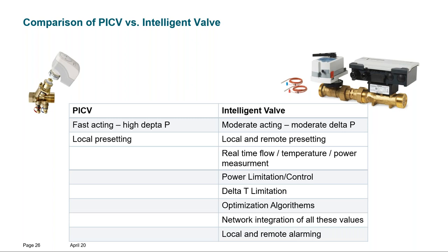The building automation controller can react on changes and reprioritize between different AHUs. With power measurement based on flow and temperatures, you can limit power to different zones and risers — not only flow limitation, but actual power limitation, because that is what rooms need. Then comes delta T limitation — the focus of today — where intelligent valve solutions can perform advanced delta T limitation locally, plus integration into the BMS for network transparency.